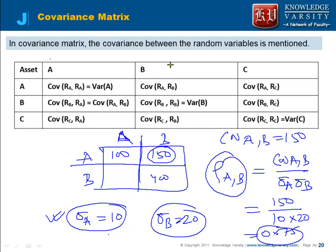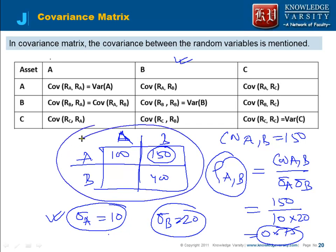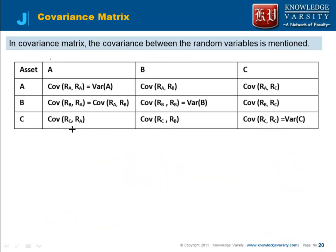So a covariance matrix can be used to derive the correlation matrix. This is one type of question you can expect. This completes reading number 2.